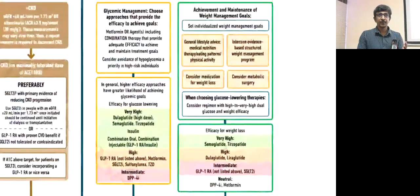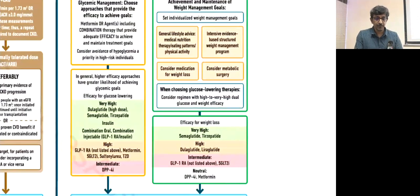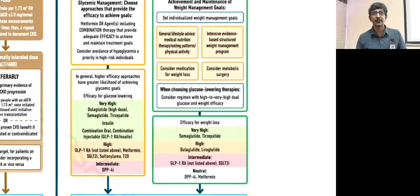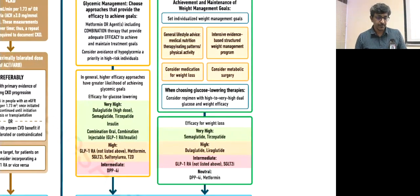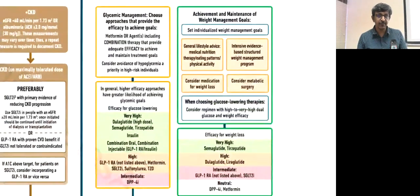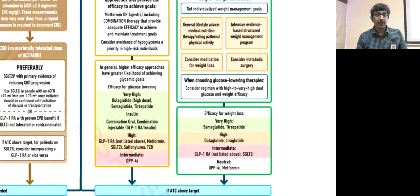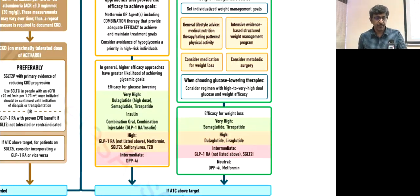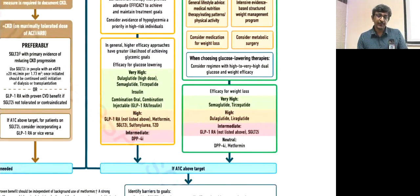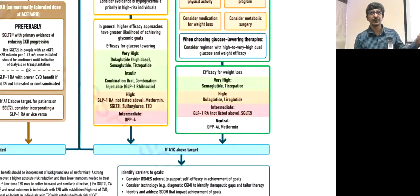For patients with obesity seeking weight reduction alongside glycemic control, GLP-1 receptor agonists are the drug of choice. Metformin and DPP-4 inhibitors are other options. Avoid pioglitazone in these patients as it can increase weight and cause fluid retention. For pure glycemic control, the most effective agents are insulin and GLP-1 receptor agonists. High glucose-lowering with favorable profiles: metformin, SGLT-2 inhibitors, sulfonylureas, and thiazolidinediones. DPP-4 inhibitors have an intermediate glucose-lowering effect.